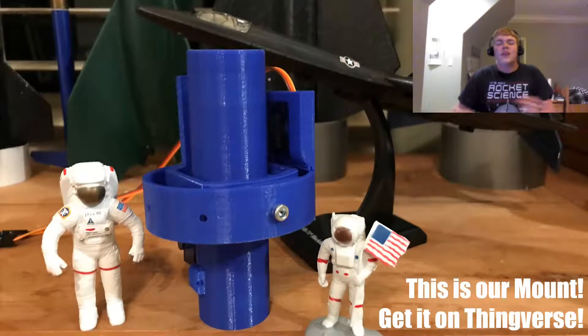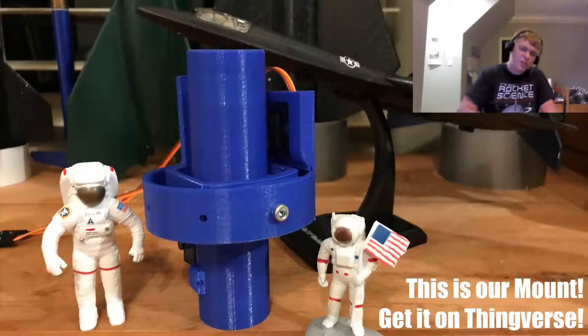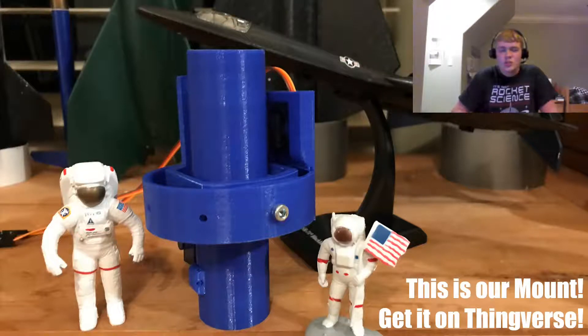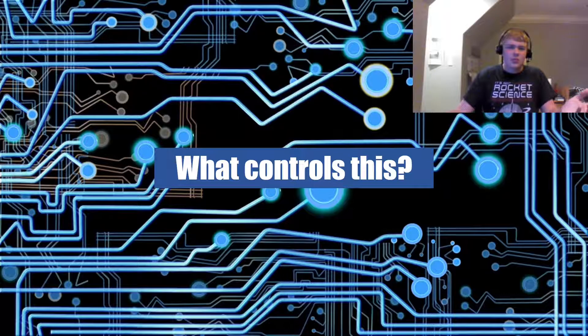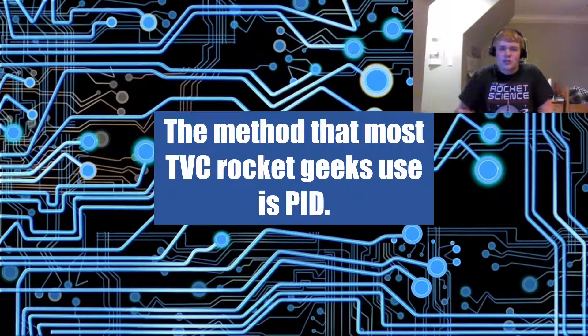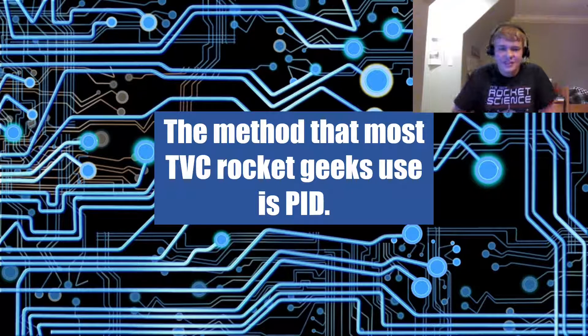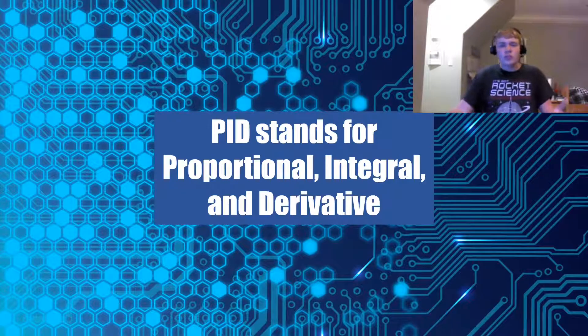Okay, so with that video, you may be asking, what controls this? How does it turn those signals from the sensors, or those data points from the sensors, into different commands for the servos? And that is simply this. It's a method that many rocket geeks use, and it is PID. PID stands for proportional, integral, and derivative.